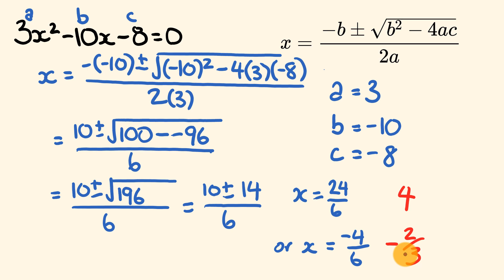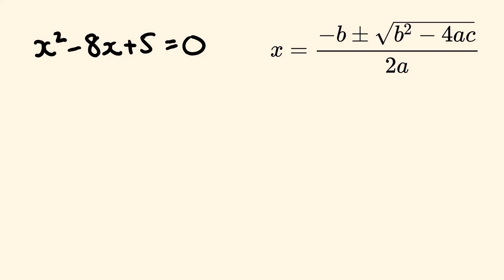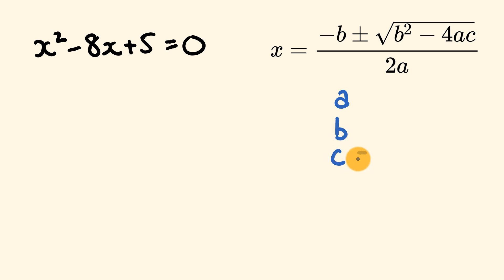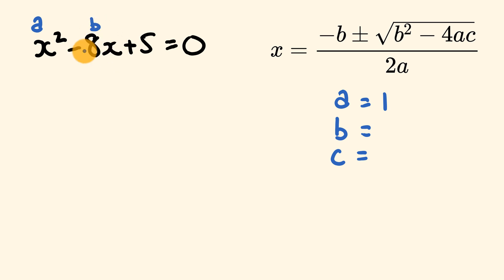What about we do one more? For our next question, we're going to work out the solution for x squared minus 8x plus 5 equals 0, using the quadratic formula. We'll go through and work out the values for a, b, and c. I encourage you to pause the video and give this one a go. a is in front of x squared — there's nothing there, so we assume a is equal to 1. In front of x we have negative 8, so b is negative 8. And c equals 5.